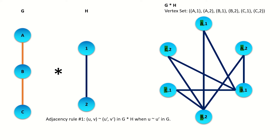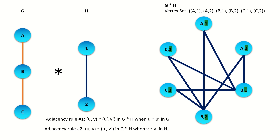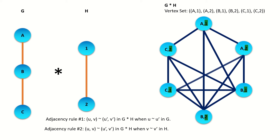Now that all adjacencies from the first adjacency rule are on our graph, the only ones remaining are those from the second adjacency rule. So ignore the left entries and focus on the right entries of the conormal product vertices. Connect all pairs of conormal product vertices whose right entries are adjacent pairs of vertices in graph H. That is the conormal product of G and H.